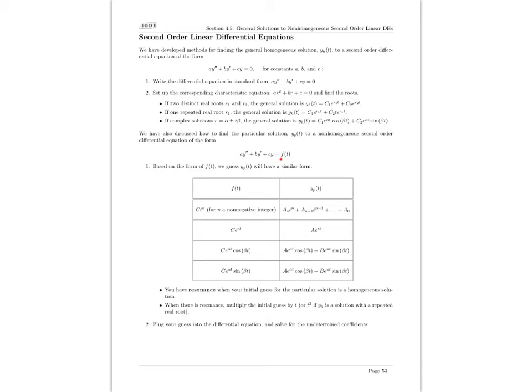Then we added in the case where what happens when we don't have zero over here but we have some forcing function. In those cases we talked about doing the guess and check method, and how we come up with our guesses is based on the form of the forcing function.